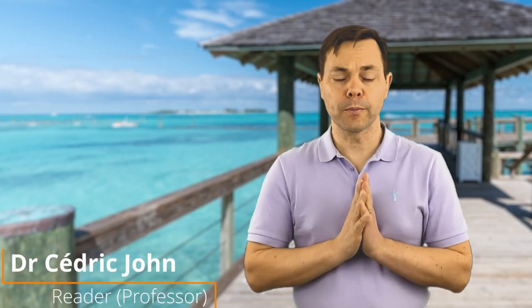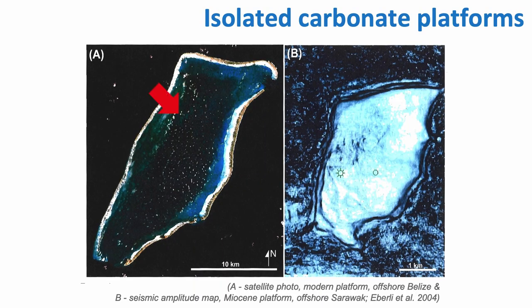Now we've looked at modern examples, but obviously if you work for an oil and gas company or if you're interested in water resources — which is a big business and very important on islands — you're interested in seismic images. It's important to understand that the Bahamas and other systems are actually analogs for subsurface examples. Here I'm showing you a picture on the left from a satellite image of an isolated system offshore Belize, and on the right is a seismic amplitude map from a Miocene platform offshore Sarawak. The scale is not quite the same, but the geometries are very similar.